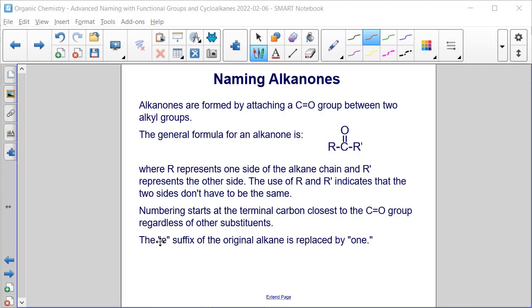And then when we're writing the naming, so again, let's just imagine we had an eight-carbon chain, so that would be octane. We would replace the E in the A-N-E ending by O-N-E. So octane, for example, would become octanone.